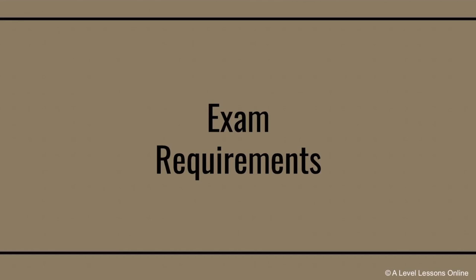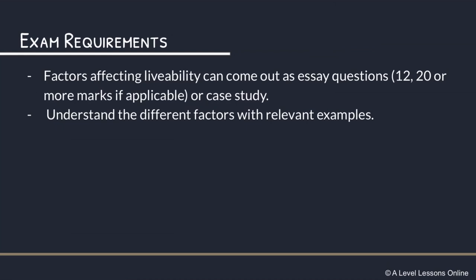Like I've mentioned, factors can come out as any type of question — it can be a three-mark question or the largest mark question in your paper. You just need to understand the different factors with relevant examples. These examples can be indicators or examples you think of yourself. For urban legibility, for instance, you can think of Singapore having ramps installed everywhere, especially in elderly communities. Areas like Bedok or Jurong already have silver zones for the elderly to move around with greater ease.